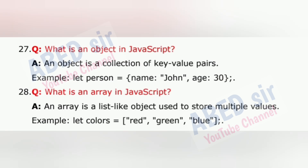Question 27: What is an object in JavaScript? An object is a collection of key-value pairs. Example: let person = { name: 'John', age: 30 }.